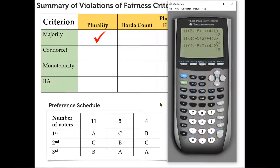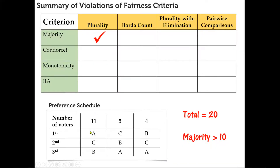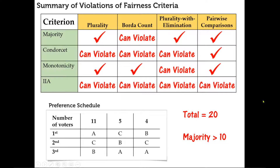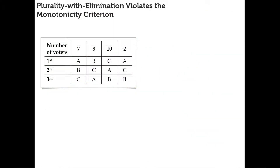According to the Borda count method, candidate C is the winner with 45 points versus A with 42 and B with 33. However, that violates the majority criterion, which says the candidate with a majority vote should be the winner. So Borda count can violate the majority criterion. For plurality with elimination and pairwise comparison, both will always meet the majority criterion. A check mark means it always meets the criterion; 'can violate' means there's a possibility of violation. We're now going to look at an example where plurality with elimination violates the monotonicity criterion.